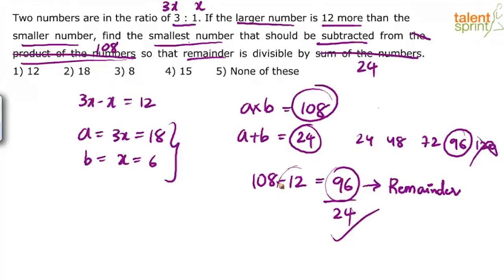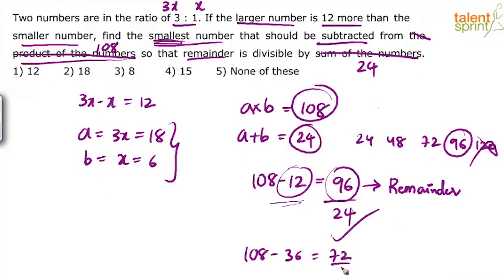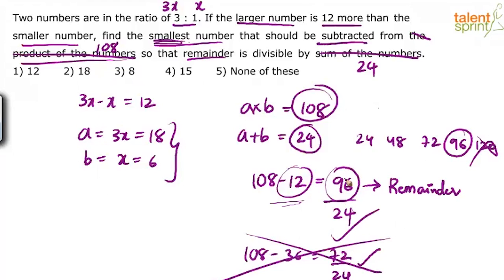So what are we subtracting? We are subtracting 12. The question asks for the smallest number, and 12 is the smallest. Note that we could also subtract 36 — since 108 minus 36 equals 72, and 72 is divisible by 24 — but 36 is not the smallest. The smallest value subtracted from 108 so that the remainder is divisible by 24 is 12, which is option A.